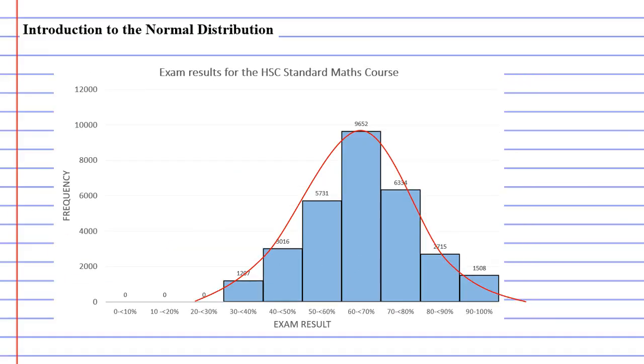Here's an example of one where the center, where the peak is, is actually probably around the 65 percent mark. We can see the reason this has happened is because nobody got between 0 and 30 percent. So our center is halfway between 30 and 100 percent, which is 65 percent.